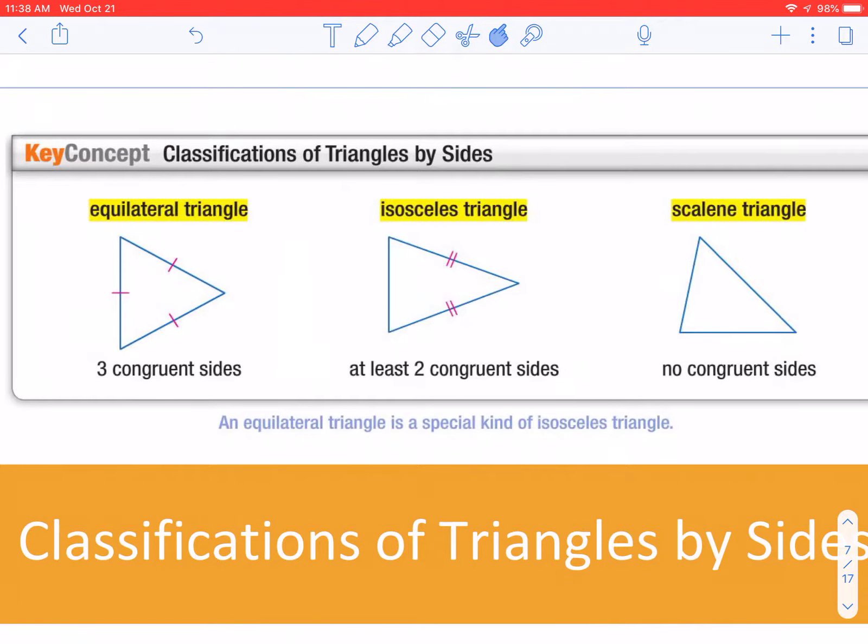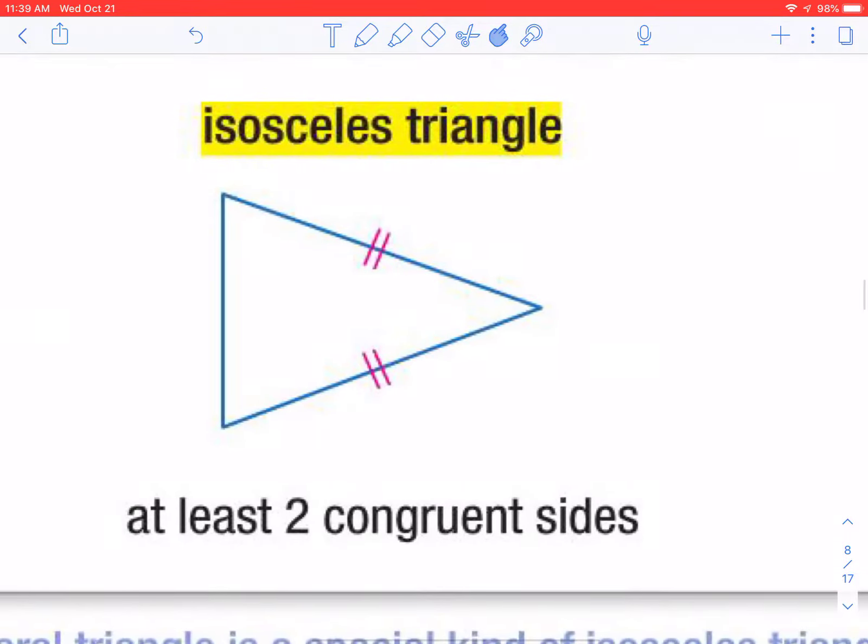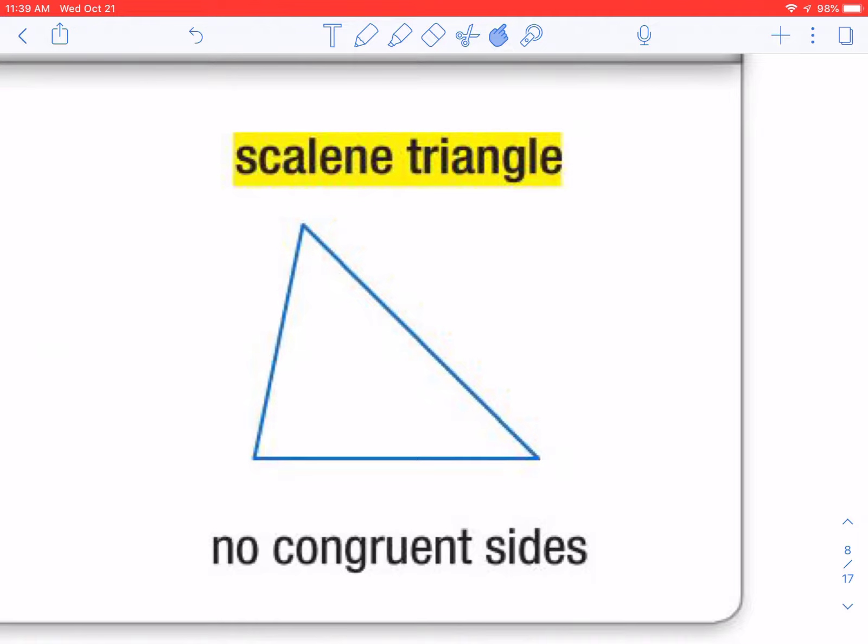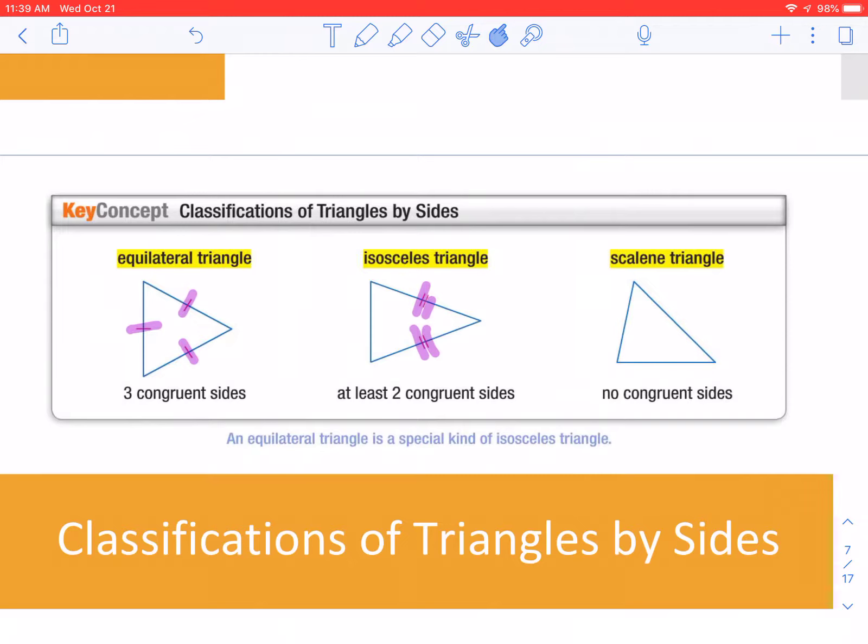Next we have classification of triangles by sides. We have three of these. Equilateral, and I'm just going to highlight. We have three sides that are the same. I know you guys have studied this before. If we go to an isosceles triangle, it has at least two congruent sides. And last is scalene. Scalene triangle is none of the sides are congruent. So, equilateral, isosceles, or scalene.